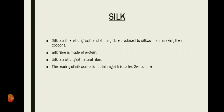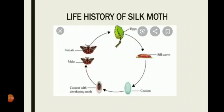Before we describe the process of obtaining silk, it is necessary to know the life history of a silk moth. In this picture you can see it is a cycle consisting of eggs, then silkworm, then cocoon, then the cocoon developing into the moth, followed by male and female, and again this female silk moth lays eggs.